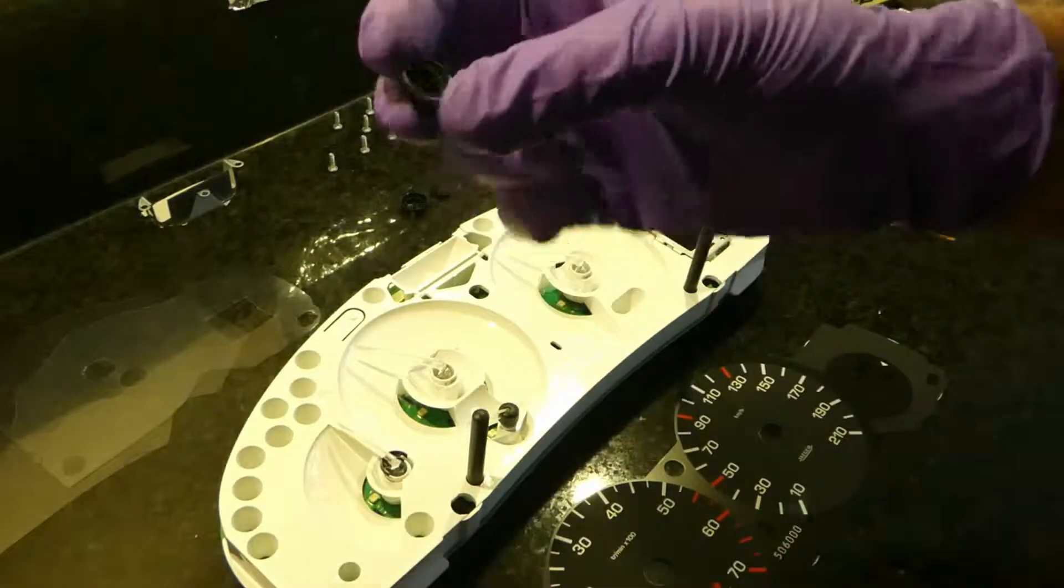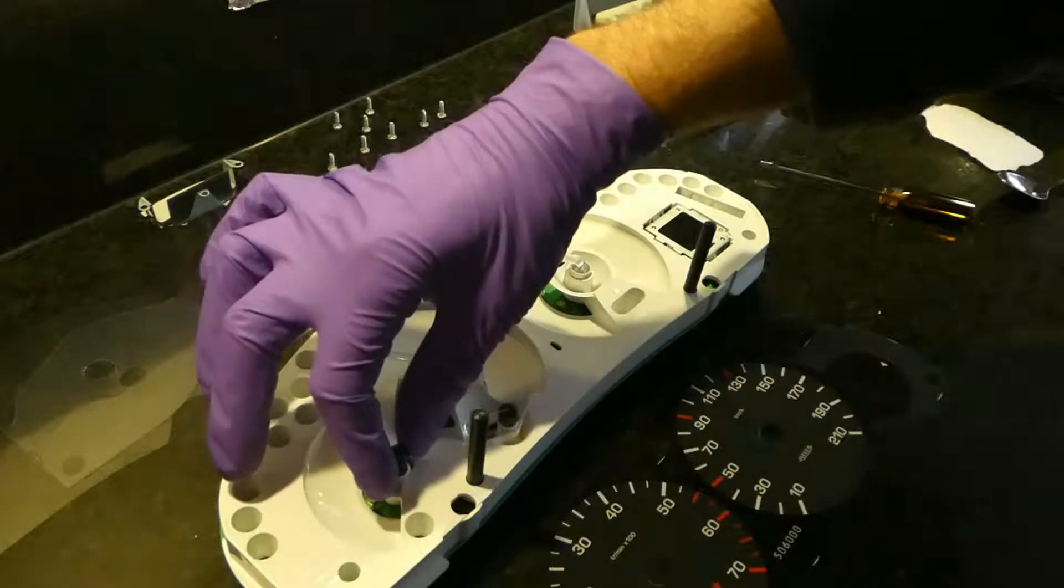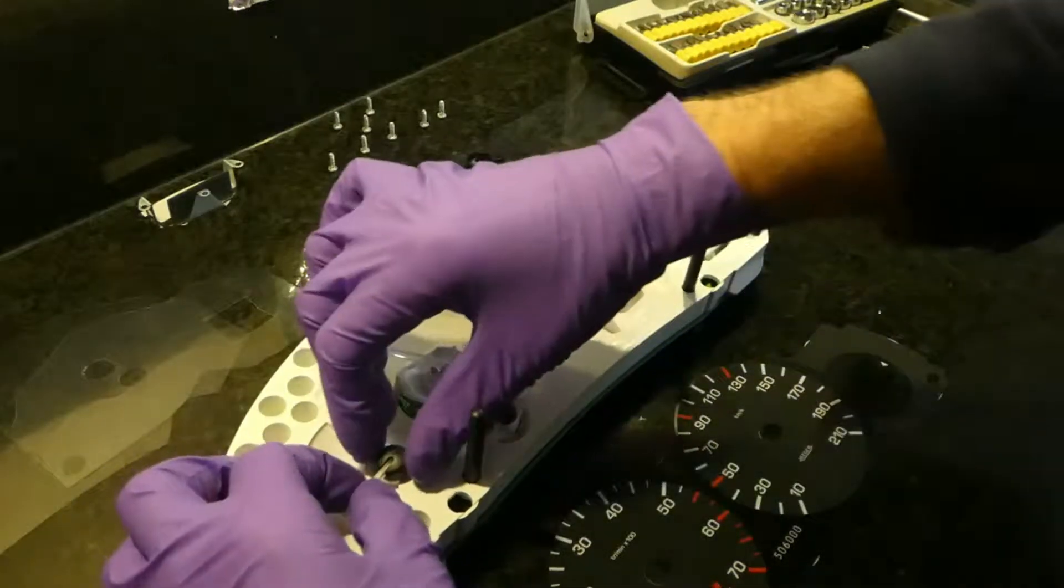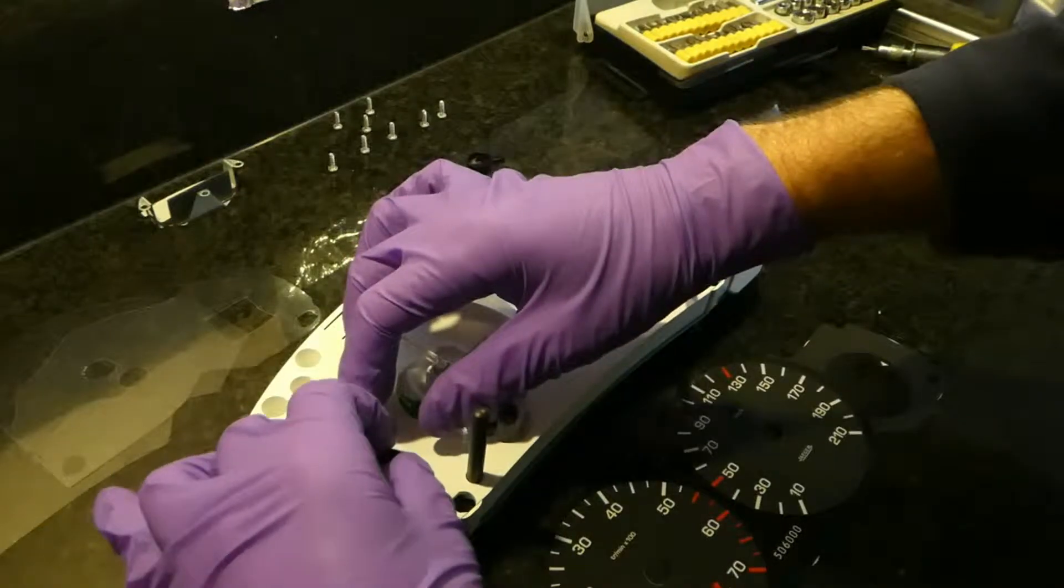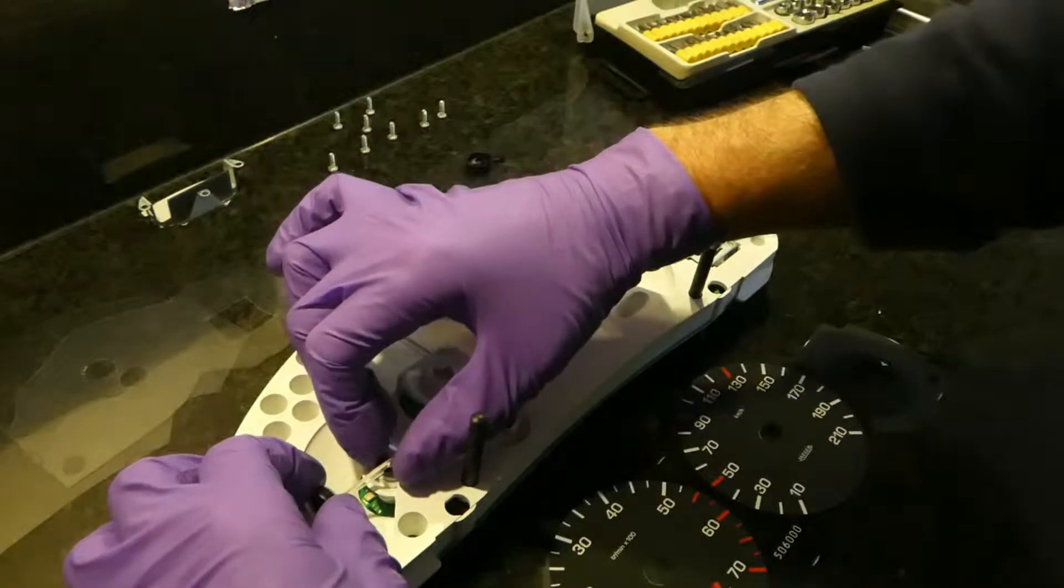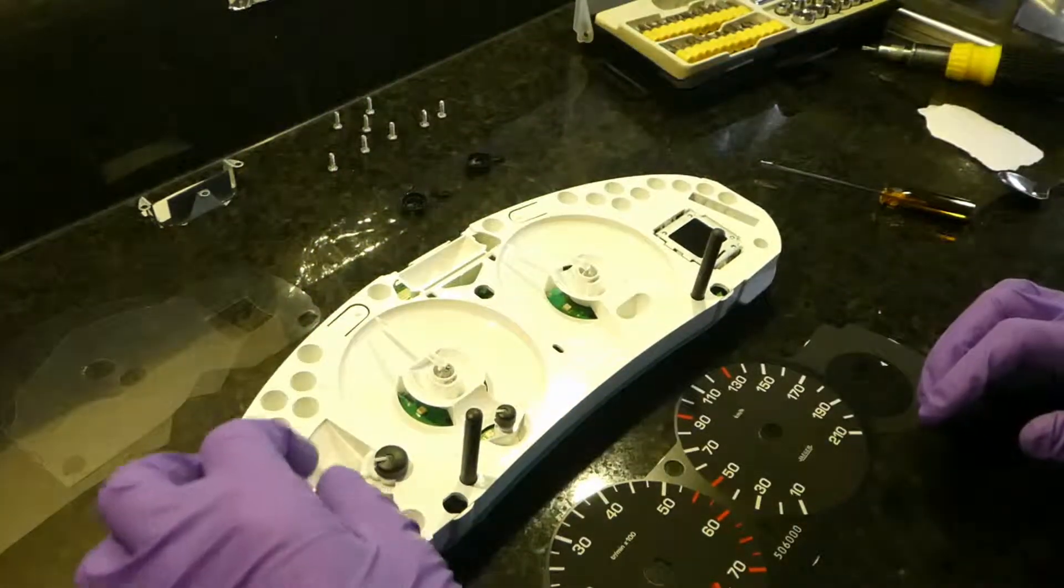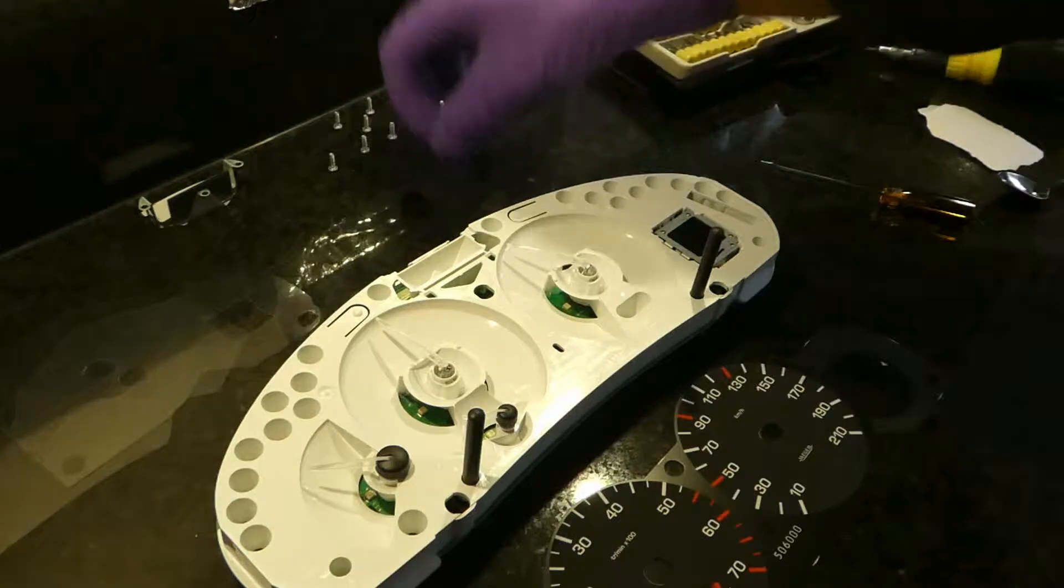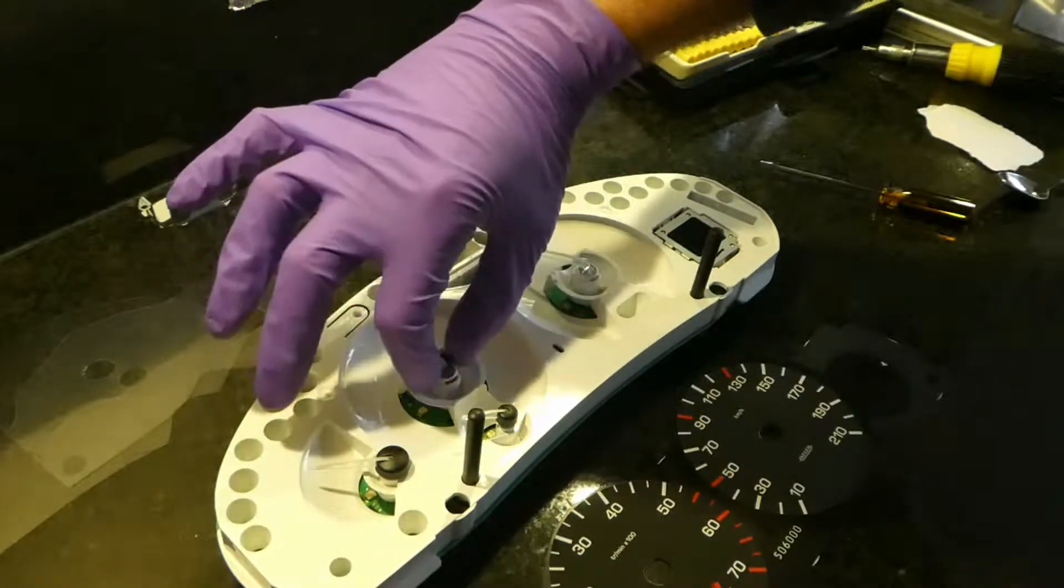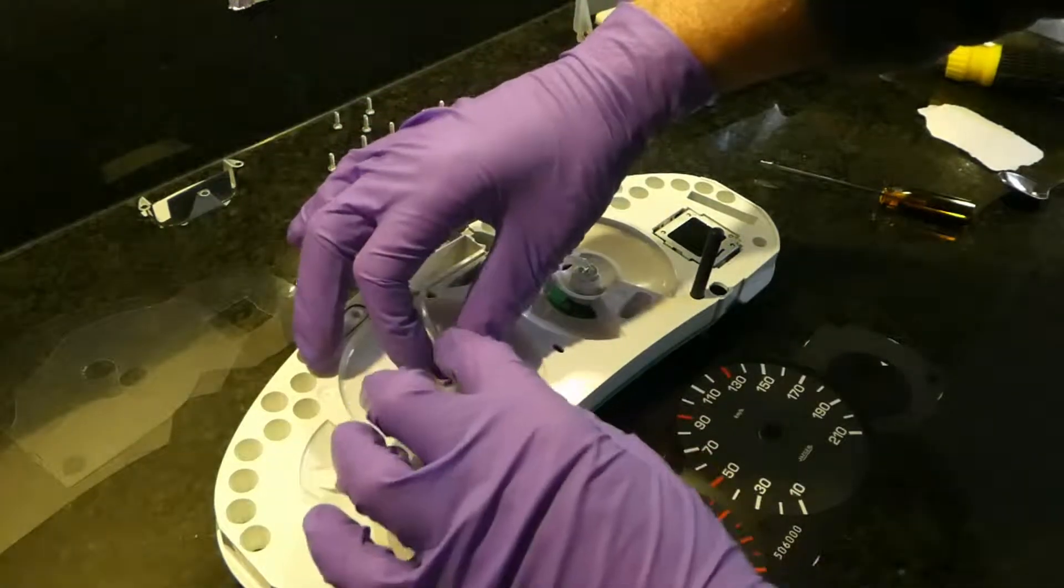Then you slide the top bit over and you basically clip it. It doesn't always go that easy, sometimes they just need to be centered, but you'll hear a clicking sound like that. You put it underneath, push the top part over, and then you clip it.